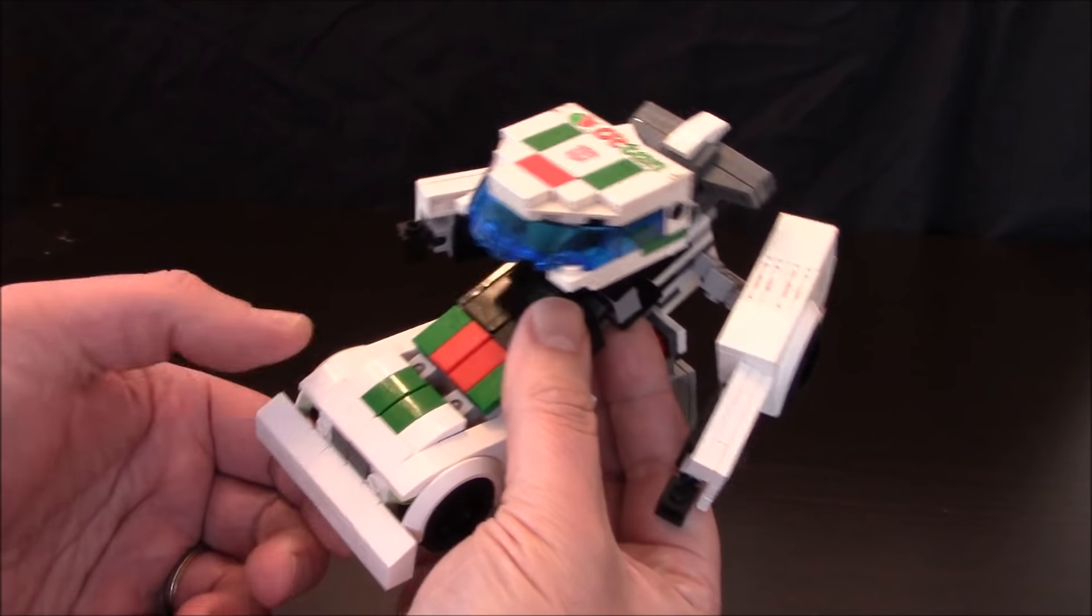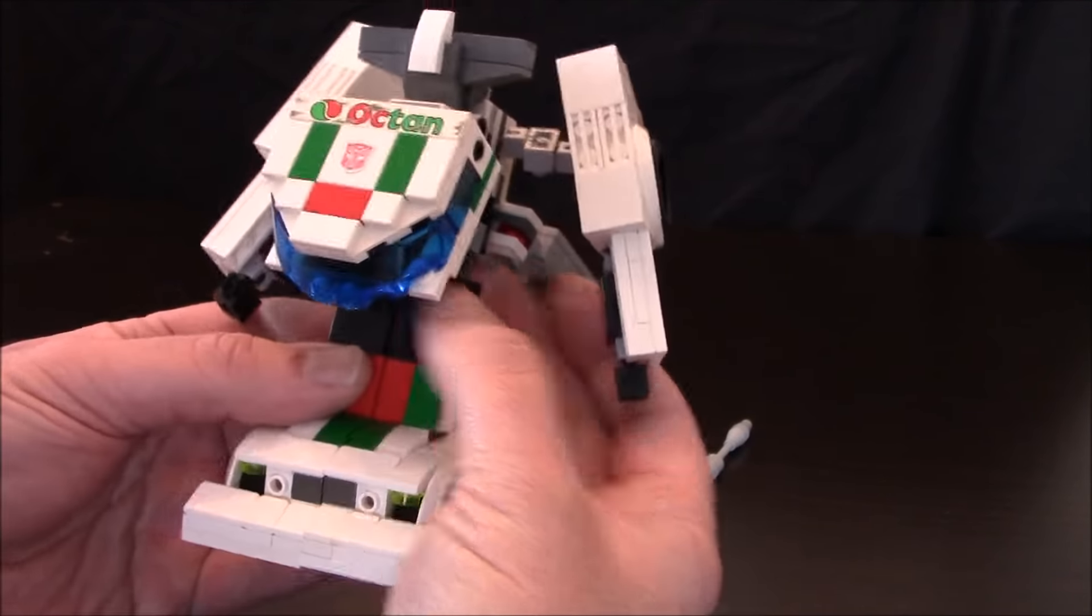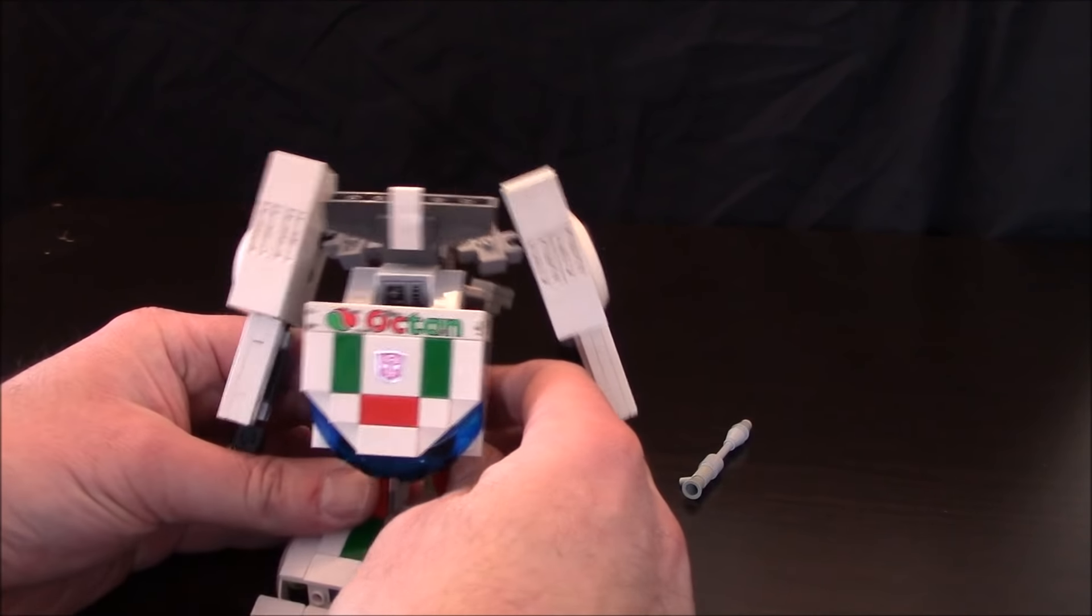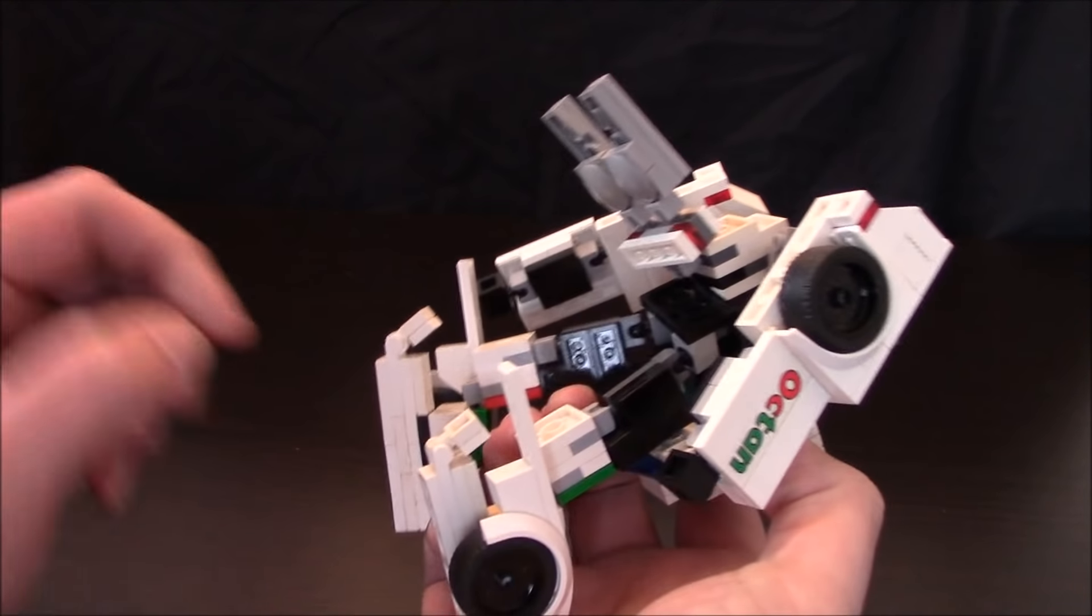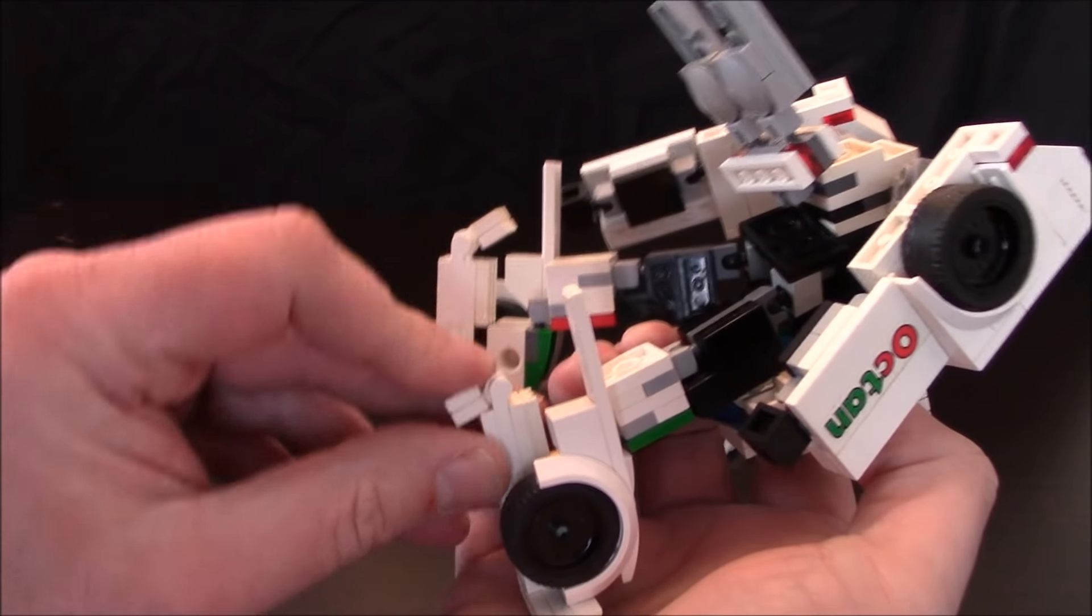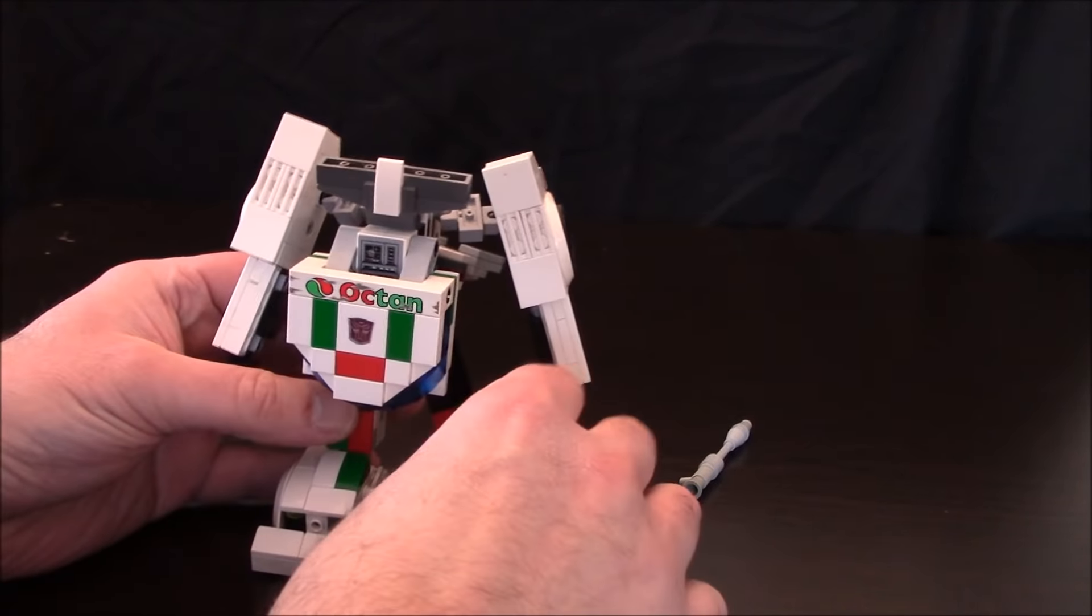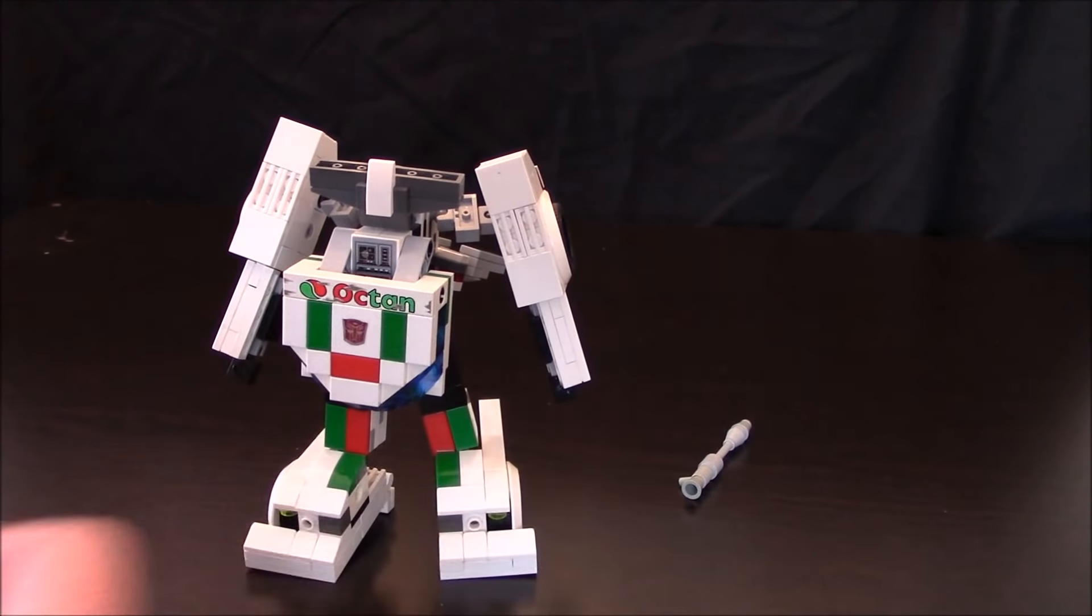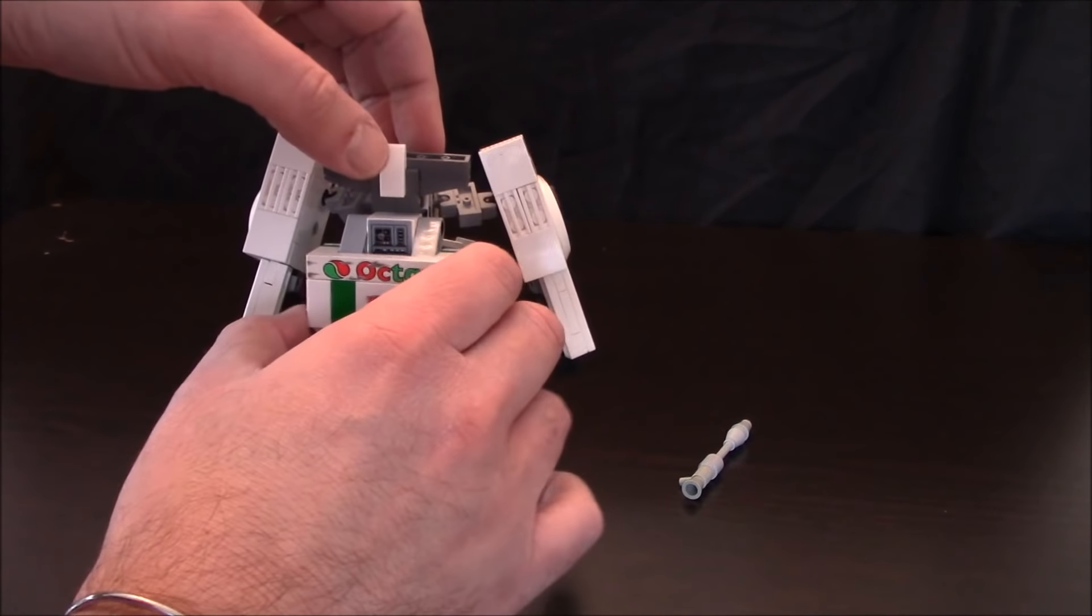That frees up what will become the legs. We're gonna go to the front of the car, turn it down like this, and separate the two components. Go to the back and you're gonna have little heel spurs that come down to keep him up in robot mode.